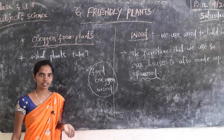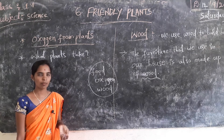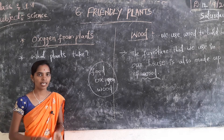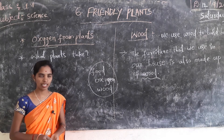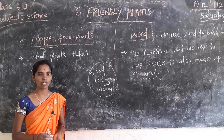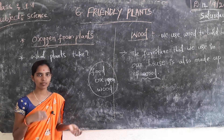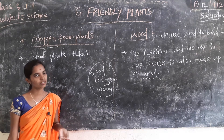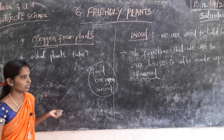We breathe oxygen. Plants need carbon dioxide. Plants take in carbon dioxide and give out oxygen for us.